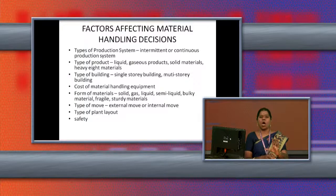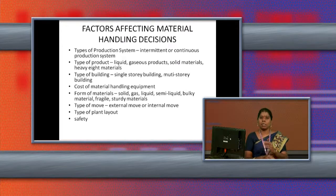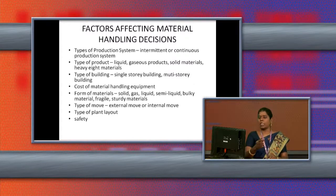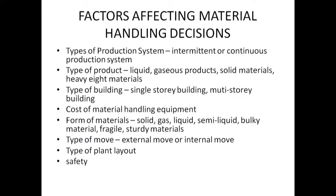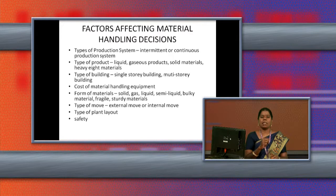The next factor is the type of product. What type of product we are going to use is very important. If the raw material is a liquid, we can use pipelines. If it is a gaseous item, pipelines are the best way to carry the product from one place to another. For solid materials like sand, stones, and bricks, we have to decide the handling equipment based on the type of product used in our manufacturing process.